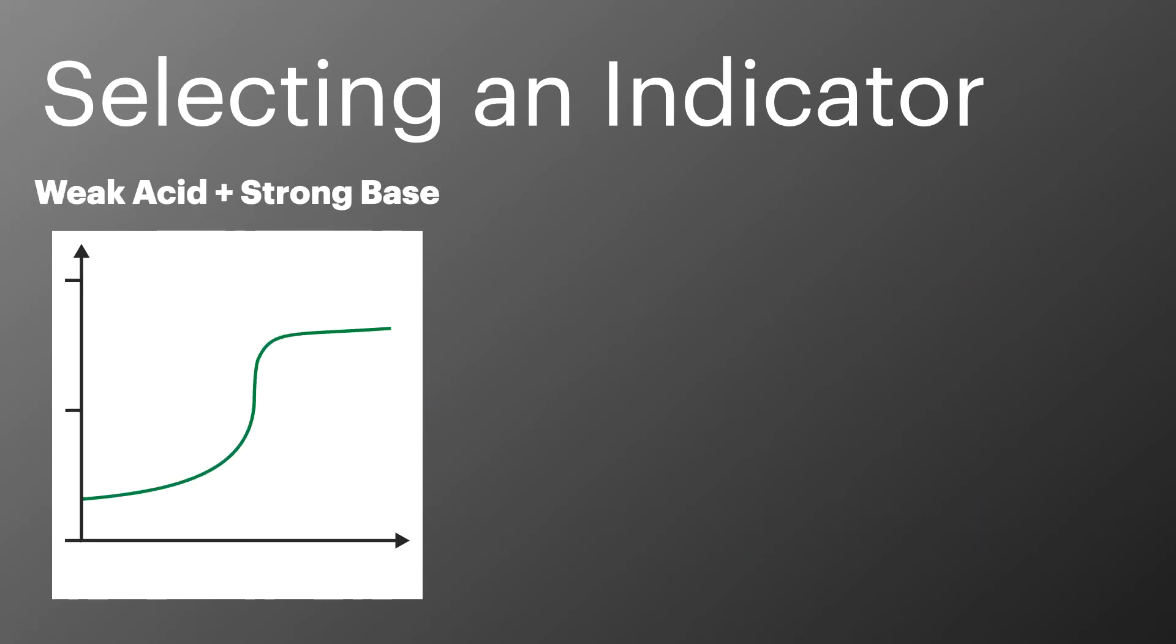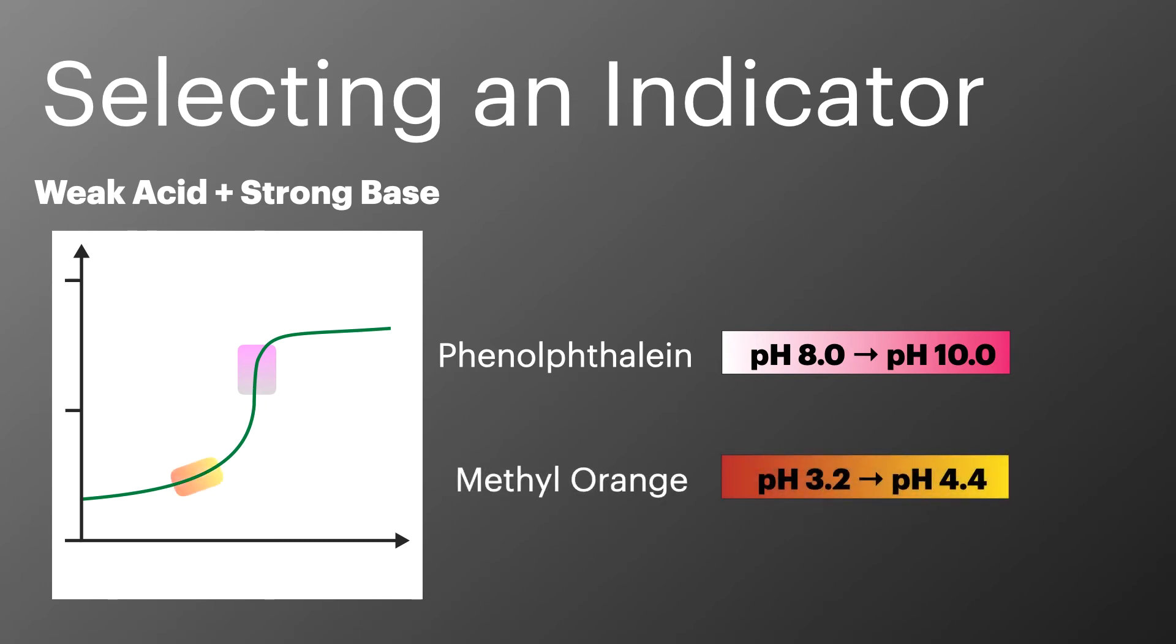In this example we're adding a strong base to a weak acid. Phenolphthalein has a range of pH 8 to 10 and it sits at the steepest part of the curve on the equivalence point. This makes it a suitable indicator for this titration. While methyl orange has a pH range of 3.2 to 4.4 and sits too low on the curve and away from the equivalence point which makes it unsuitable for this titration.